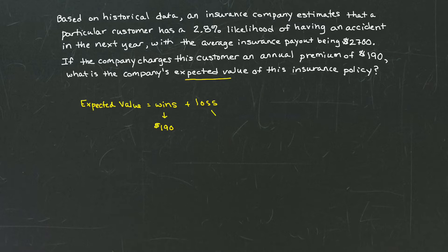And the loss is when they have to pay it out. So if you're talking about the expected value in terms of an insurance company, the wins are the annual premium that they gain from a person or customer, and the loss is the money they have to pay out in the event of an accident.